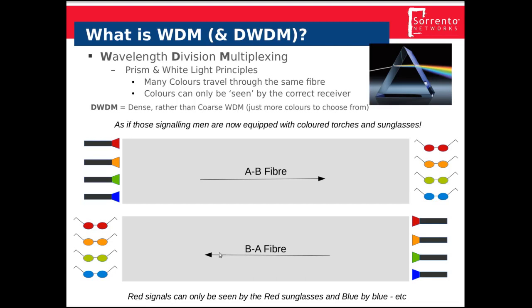The red guy can only see the red signals, the orange can see the orange, blue can see blue, and so on in both directions. That is the principle of wavelength division multiplexing. In this simple example, we now have four separate signals going over the same fibre at the same time — something very unlike what you can achieve with a copper cable.